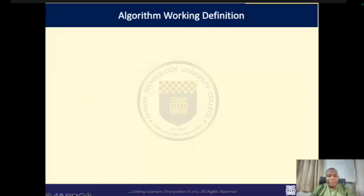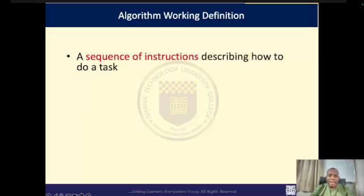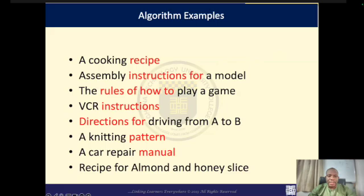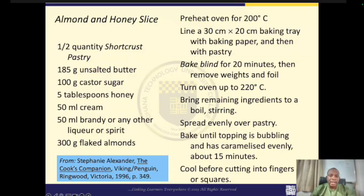Now, let us come back to the definition of an algorithm. An algorithm is a sequence of instructions describing how a task can be done. The emphasis is on sequence of instructions as opposed to actually executing them. Writing your algorithm is not executing the instructions, but describing how the task should be done. Examples include a cooking recipe, instructions for assembling a model, rules on how to play a game, and directions for driving from A to B — all are sets of instructions to follow to complete a task.